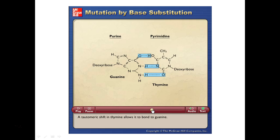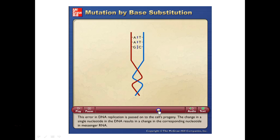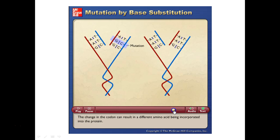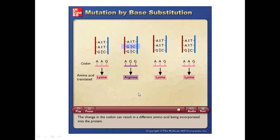Here's another example of a base substitution: guanine is supposed to be with cytosine, but it's got thymine. If that gets fixed such that the C is now considered correct, we have a mutation — so when you look at that codon on the chart, originally this codon said put lysine there, but now it's saying arginine. That's a phenotypic change: the genotype changed and the phenotype changed. The physical expression of that genetic information just changed.